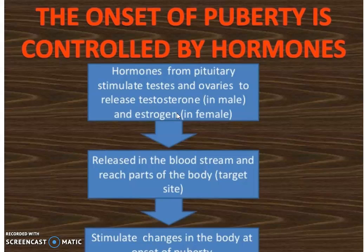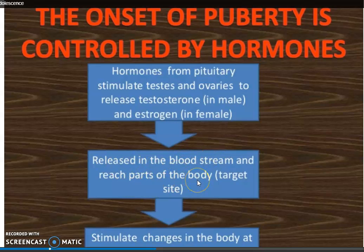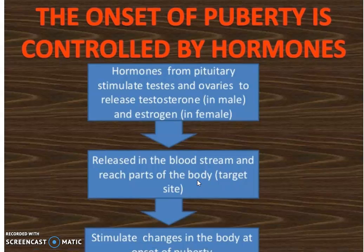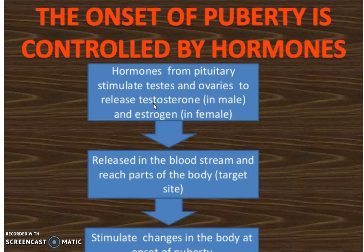जब भी adolescence/puberty का time start होता है, लगभग 11 साल की उम्र के आसपास, उस time पर pituitary gland — जो हमारे brain में, हमारे सर के पीछे छोटे दिमाग वाली जगह होती है — वो testes और ovary को stimulate करती है, यानी active करती है, ताकि वो testosterone और estrogen hormone को secret कर सकें। जैसे ही ये दोनों hormones male और female की body में release होते हैं, वो blood stream में release होते हैं और पूरे body में पहुँचते हैं।